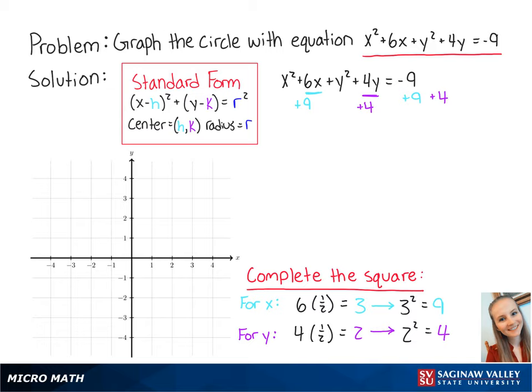By completing the square, our equation becomes x plus 3 squared plus y plus 2 squared equals 4.